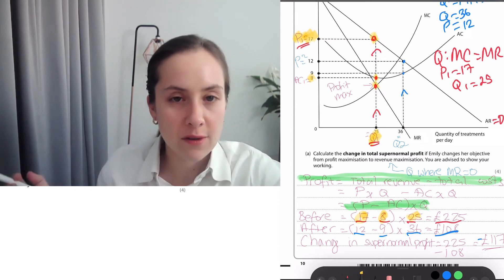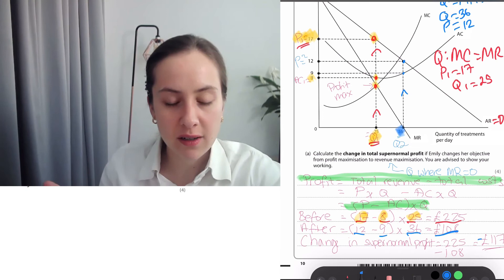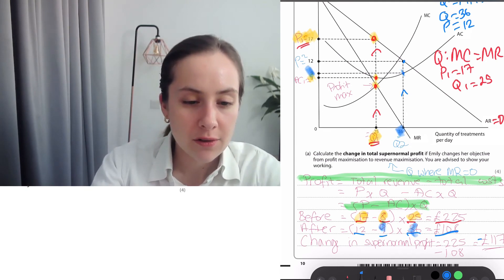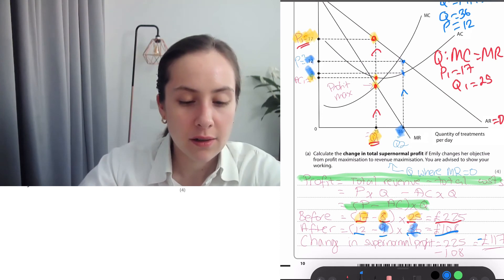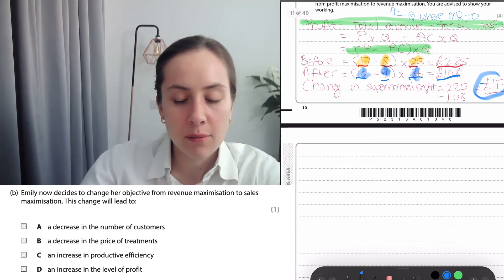And after Emily has changed to revenue maximization, the quantity is now 36, the average costs are now 9, and the price is now 12, giving her a profit of 108. And as a result, her profit has fallen by 117 pounds.